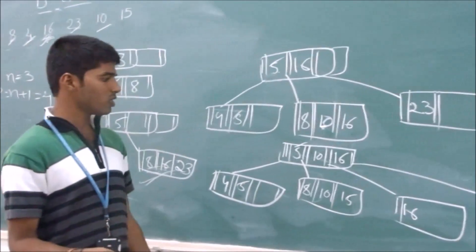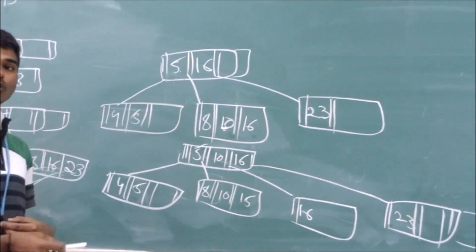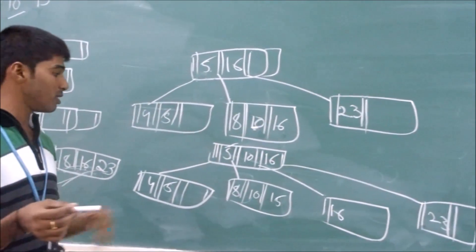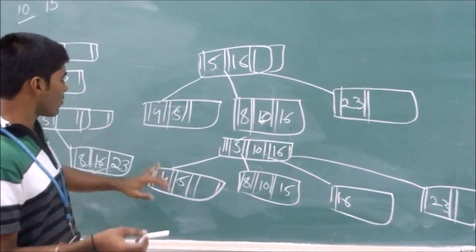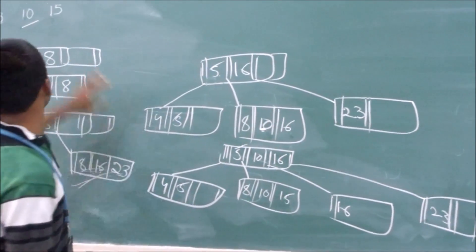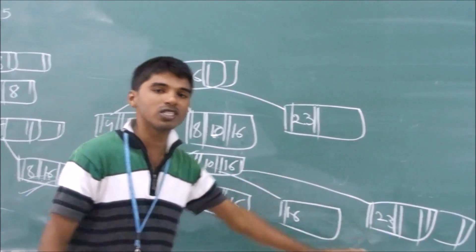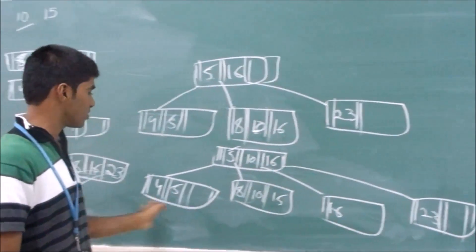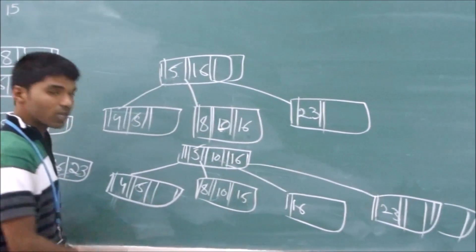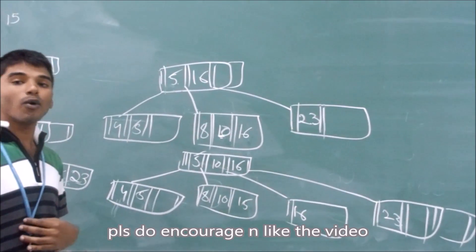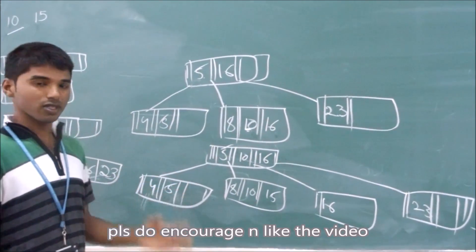It should be noted that in a B+ Tree, every leaf node should contain all the elements. We have every element — 4, 5, 8, 10, 15, 16, 23 — all placed in the leaf nodes. Thus, these leaf nodes can point to a particular record in a file.